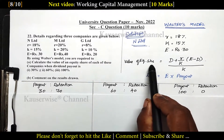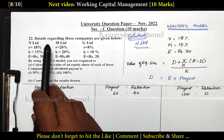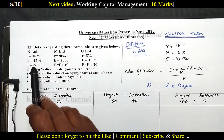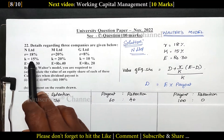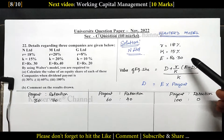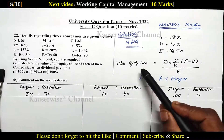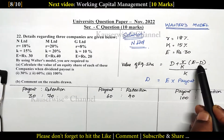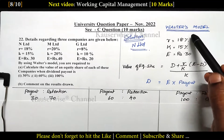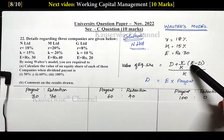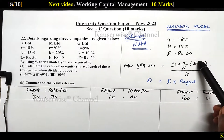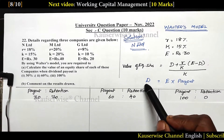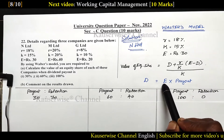We are going to calculate value of equity shares. The formula for value of equity according to Walter's model is: D plus R by K into E minus D, divided by K. Here in this problem they have given R, K, and E. Except D, all other information is given in the problem. First we need to calculate D. The formula for D is: earnings per share into payout ratio.